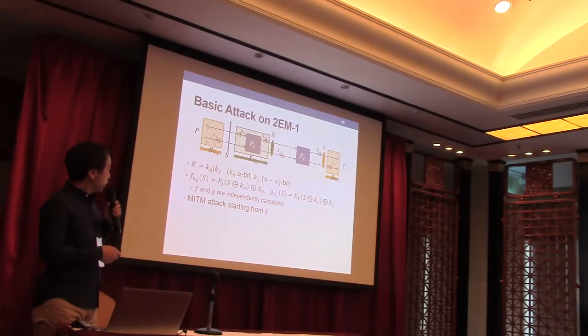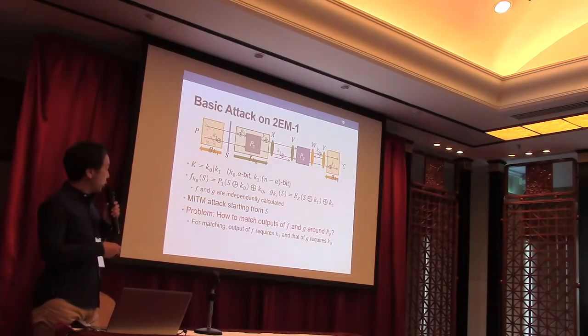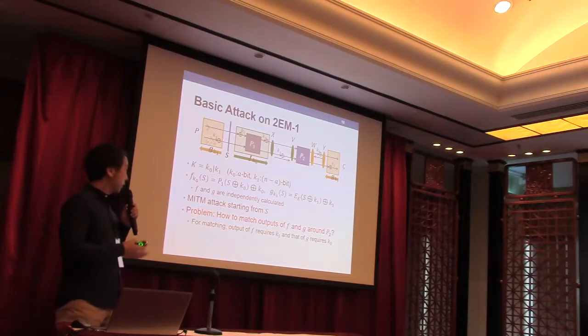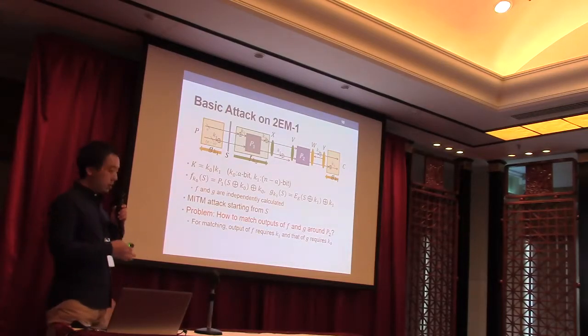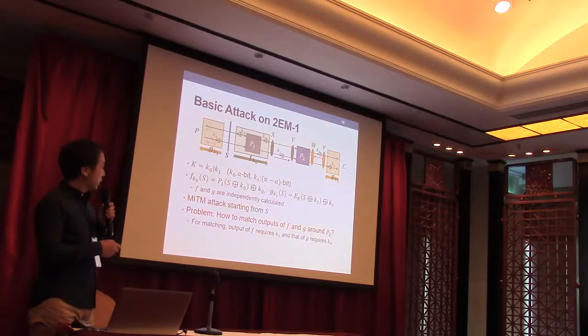However, for matching via P2, we need another key information, K0 and K1. So this seems to be difficult to apply the meet-in-the-middle attack to this design. So we introduce two new techniques to bypass this part.